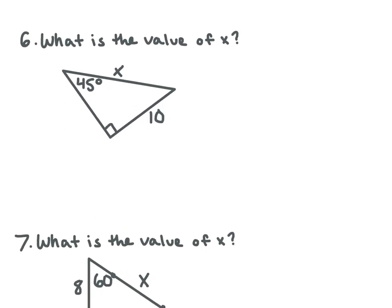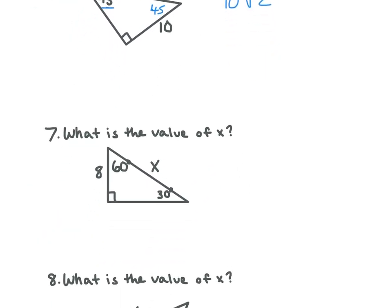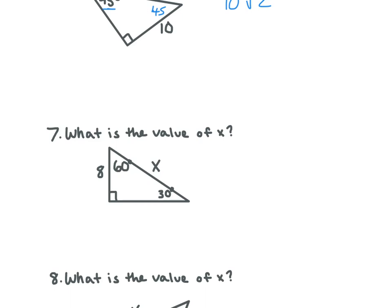Let's look at number 6. What is the value of x? In a 45-45-90 triangle, we multiply by square root 2. So what do we get for x? 10 square root 2. For number 7, we also times it by 2 — so x equals 10 square root 2. Perfect.